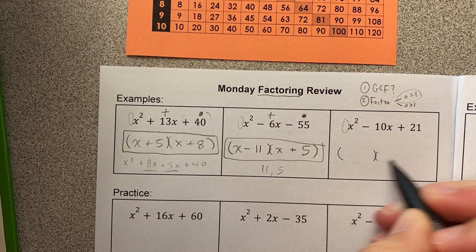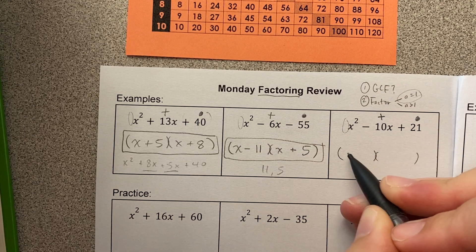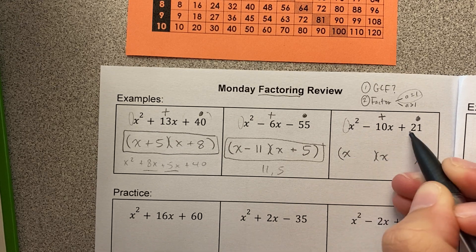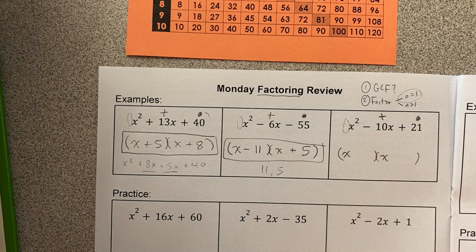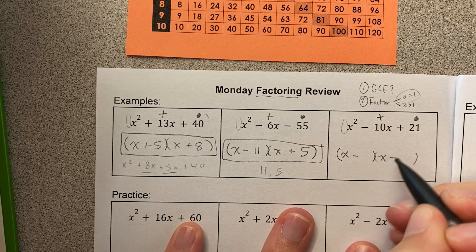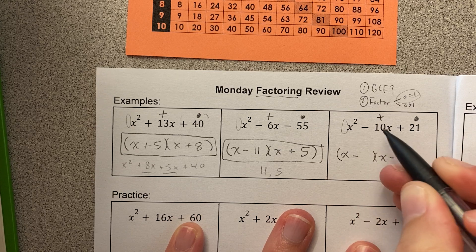All right, last one. Here I need two numbers that multiply to positive 21 and add to negative 10. What are two numbers that multiply to a positive and add to a negative? The only way that's possible is if my two numbers are negative and negative, because negative times negative is positive, and negative plus negative is negative.